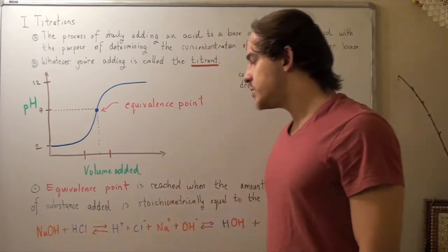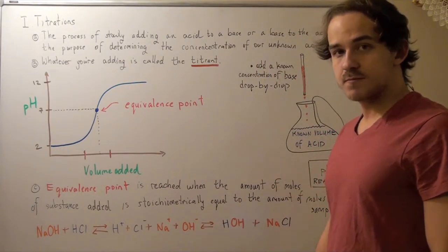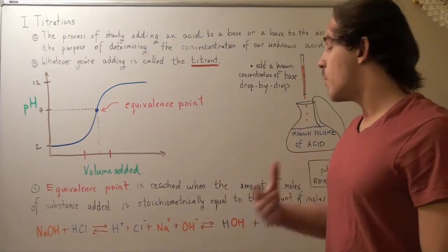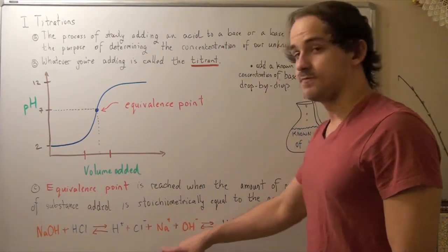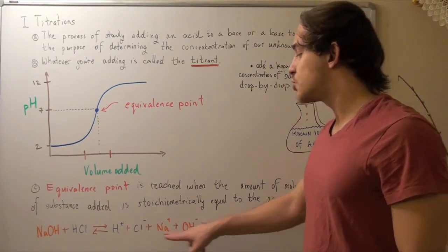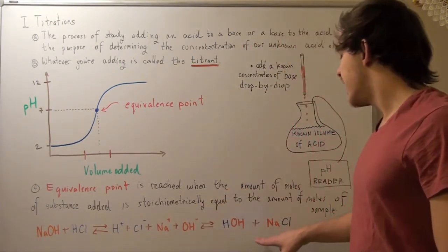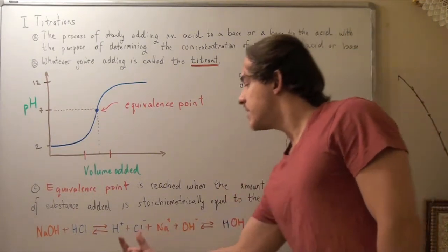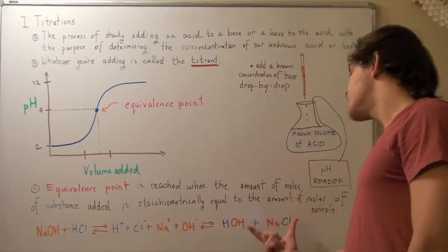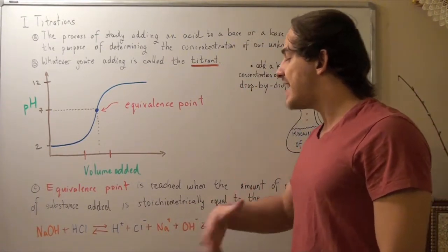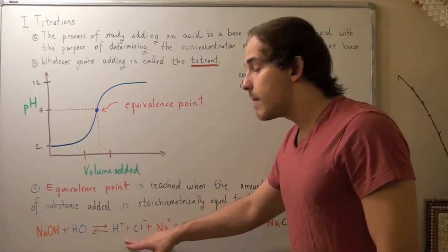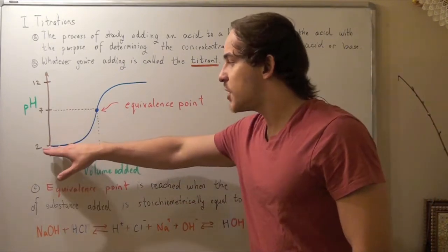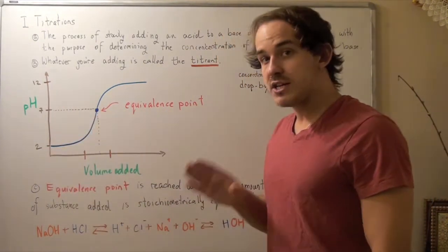NaOH will dissociate into Na+ and OH-. But since we only have a small amount of NaOH, that means we only have a small amount of these ions. These are the ones that associate with H and Cl to form water and NaCl. So initially, only a small percentage will reassociate into this form. We will see a decrease in the H+ ion, but a very small decrease. That means we're only going to see a very small change or increase in pH initially.